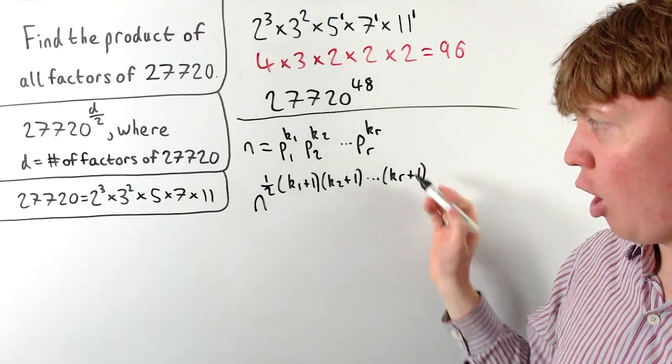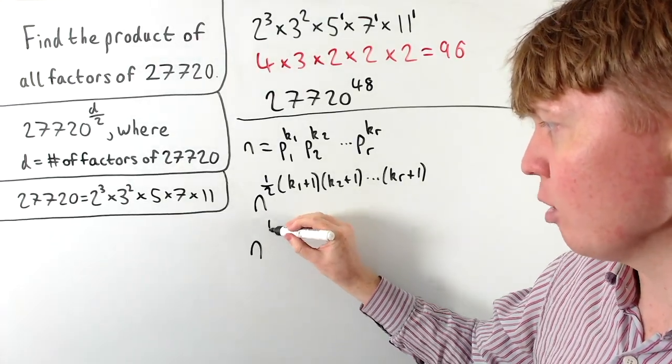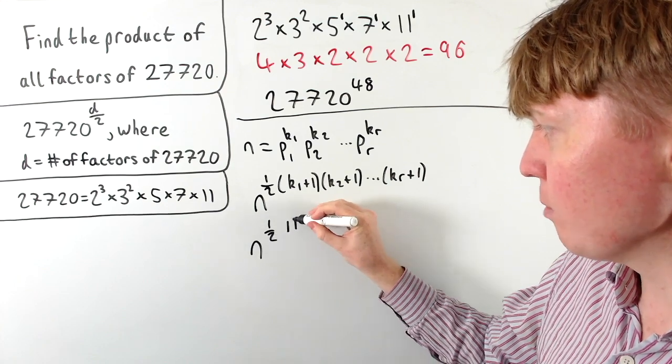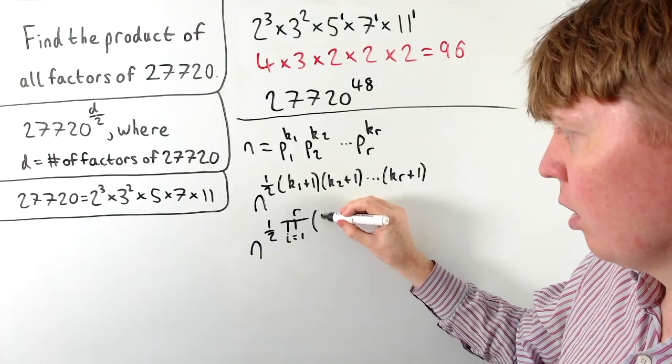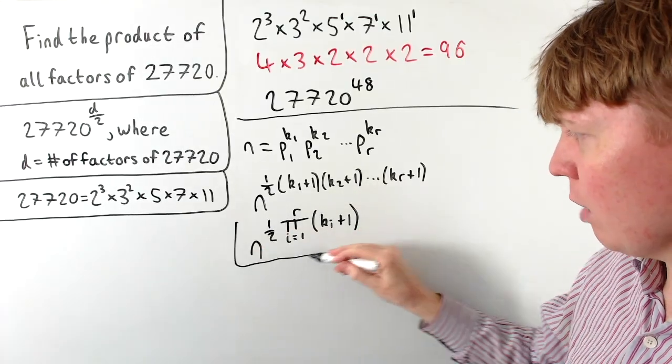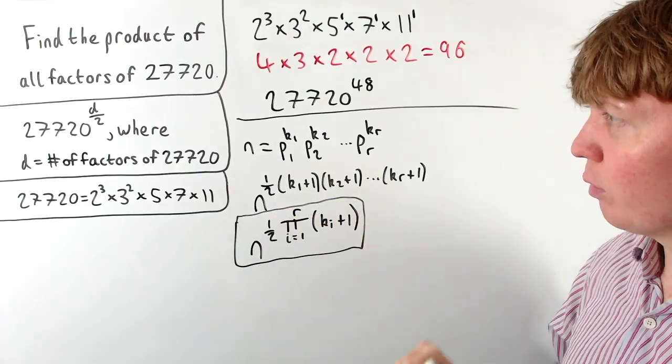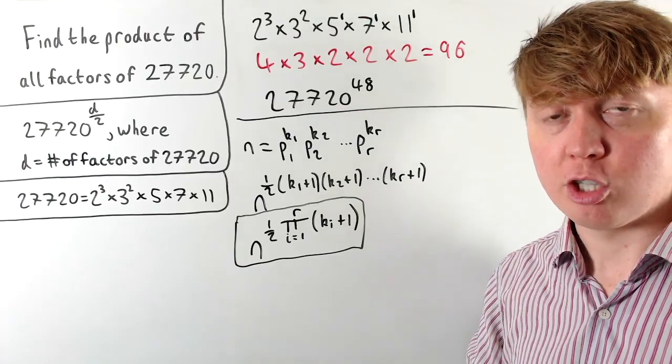And we could even write this using a pi notation for the product to give a quite neat formula. So we get n to the power of a half times the product from i equals 1 up to r of ki plus 1. So we get quite a neat looking formula then for the product of all of the factors of this integer n, if we know what its prime factorization is.